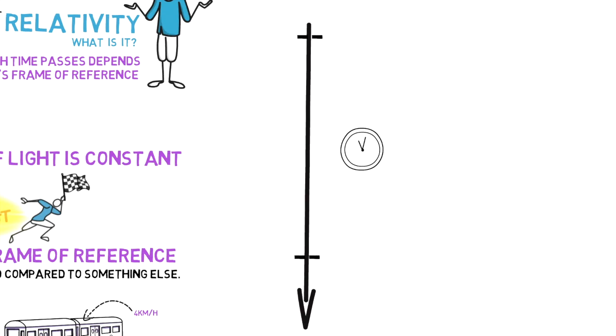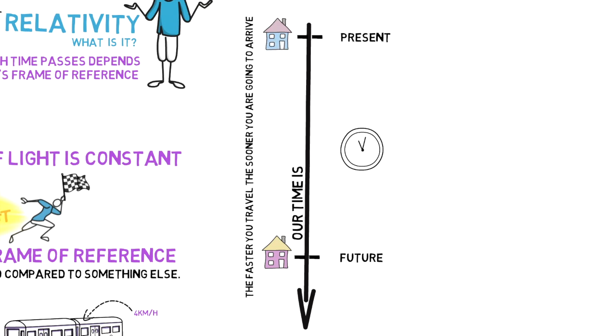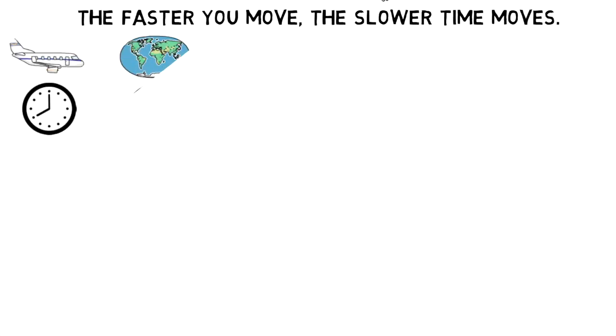But how does this apply to time travel? What is the future but a location in time? If you think about it, traveling from the present to the future is like getting from one place to another. So it makes sense that the faster you go, the sooner you get there. The time we take is personal to us. It depends on our frame of reference. Using this idea, Einstein proved that the faster you move, the slower time moves.